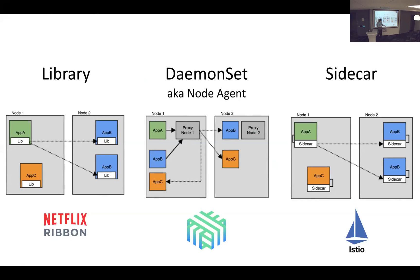There's a newer model popularized by a project called Istio, which is the sidecar model. In the sidecar model, each of your applications in Kubernetes — the main application container inside your pod — you ask Kubernetes to inject a little sidecar into the pod. That's a second container. It shares the network namespace with your main application container, and it does a little bit of IP table shimming so that whenever this application wants to talk out, or whenever someone tries to talk to it, it goes through the sidecar first.